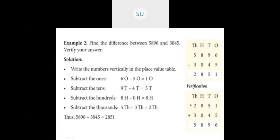Subtract starting from the ones: 6 ones minus 5 ones is 1. Then tens: 9 tens minus 4 tens is 5. Then hundreds: 8 hundreds minus 0 hundreds is 8. Then thousands: 5 thousands minus 3 thousands is 2. So the difference is 2,851.